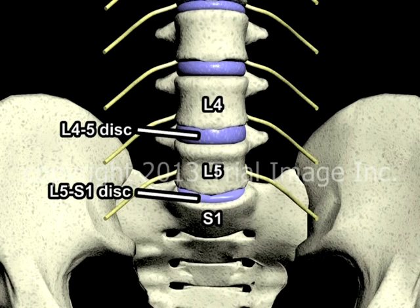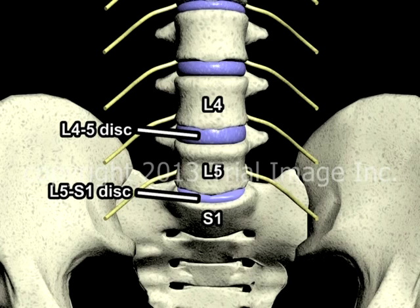The intervertebral discs are made of a firm but flexible material that act as shock absorbers between the spinal vertebra. Situated as they are at the bottom of the spine, the L4, L5, and S1 vertebra and their accompanying discs bear considerable stress as a result of the weight and movement of the upper body, and as a result, have a greater frequency of injury and degenerative change than their counterparts higher up in the spine, the exception to this rule being the vertebra of the neck.